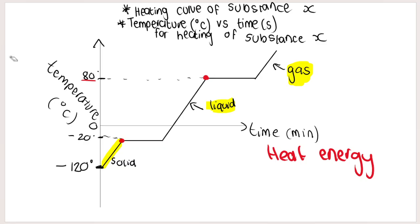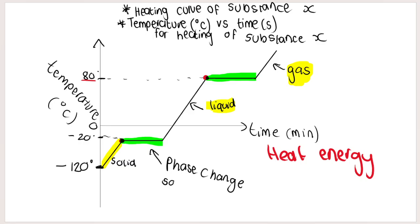Now I need you to understand what is actually happening in the horizontal parts of the graph. In the horizontal parts — these flat sections — a phase change is happening. For example, we are going from a solid to a liquid, and that process is called melting. The second horizontal represents going from a liquid to a gas — that phase change is called boiling or evaporation.